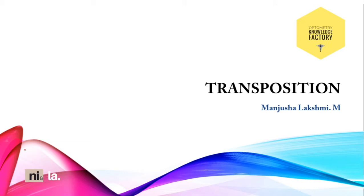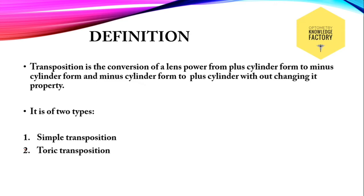Do you know what is transposition? It is the process of converting one form of cylinder into another, defined as the conversion of a lens power from plus cylinder form to minus cylinder form, and minus cylinder form to plus cylinder form, without changing its property.